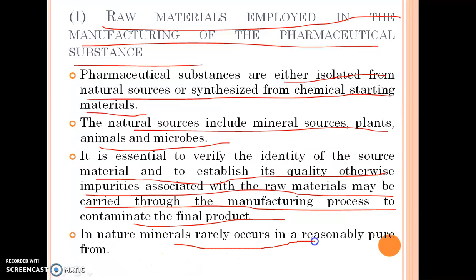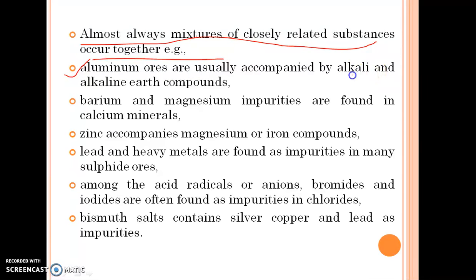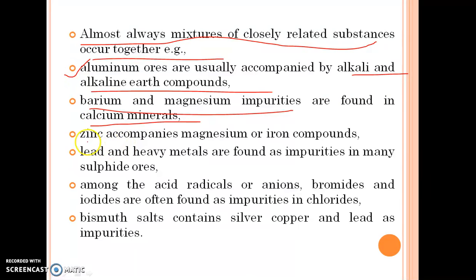In nature, minerals rarely occur in a reasonably pure form, so this leads to impurities. Almost always, mixtures of closely related substances occur together. For example, aluminum ores are usually accompanied by alkali and alkaline earth compounds. Similarly, barium and magnesium impurities are found in calcium minerals. Zinc accompanies magnesium or iron compounds. Lead and heavy metals are found as impurities in many sulphide ores.